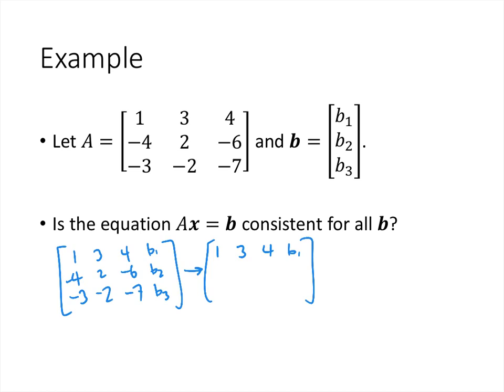We already have a 1 in the first row, first column. We want 0s below it. Multiplying row 1 by 4 and adding: 1×4 + (-4) = 0; 3×4 + 2 = 14; 4×4 + (-6) = 10; and the last entry is 4B1 + B2. Note that we'll have variable expressions in the last column and that's okay. Then multiplying row 1 by 3 and adding to row 3: 3×1 + (-3) = 0; 3×3 + (-2) = 7; 4×3 + (-7) = 5; and 3B1 + B3.